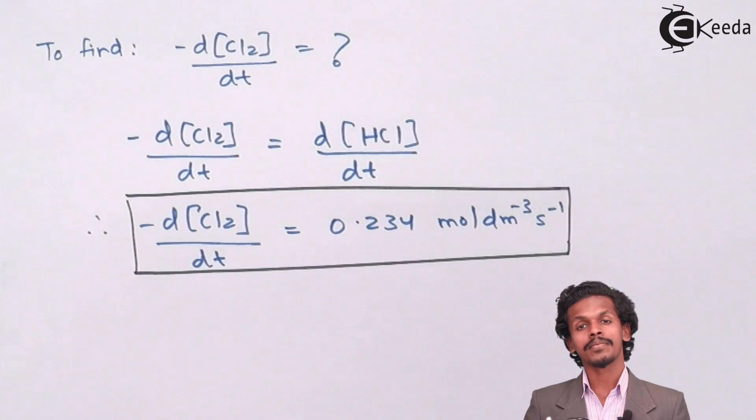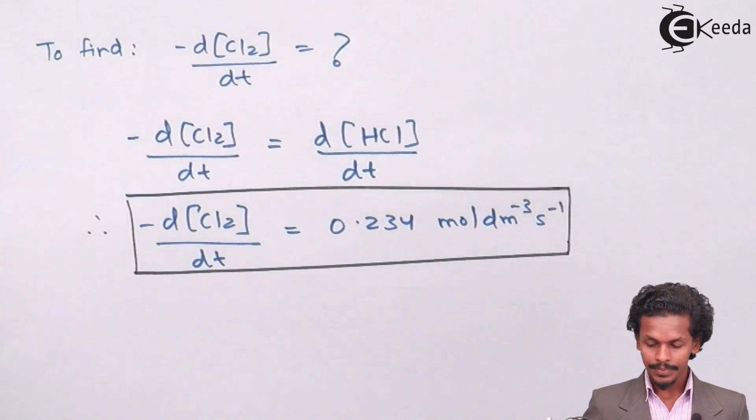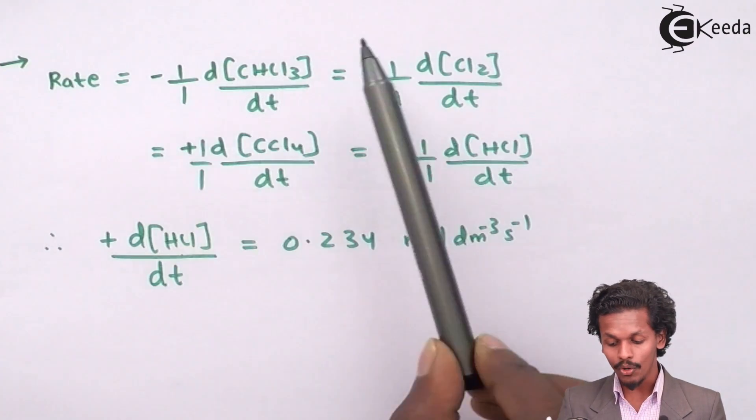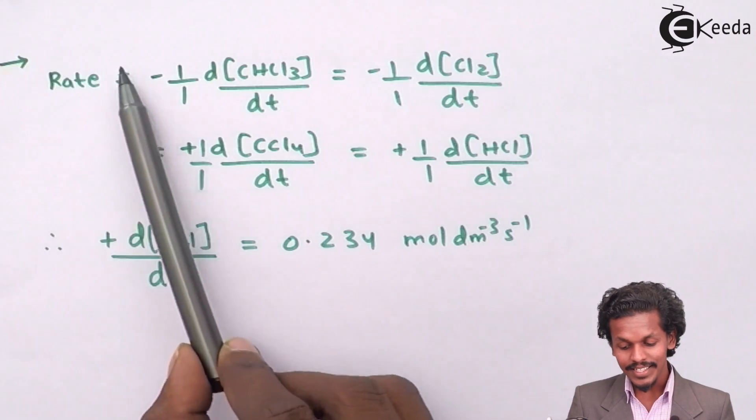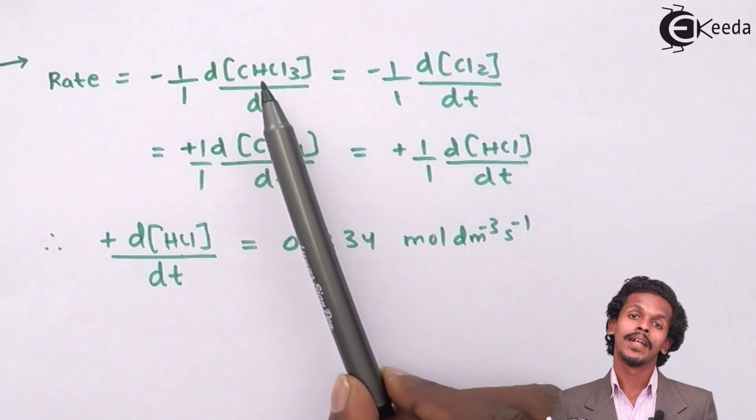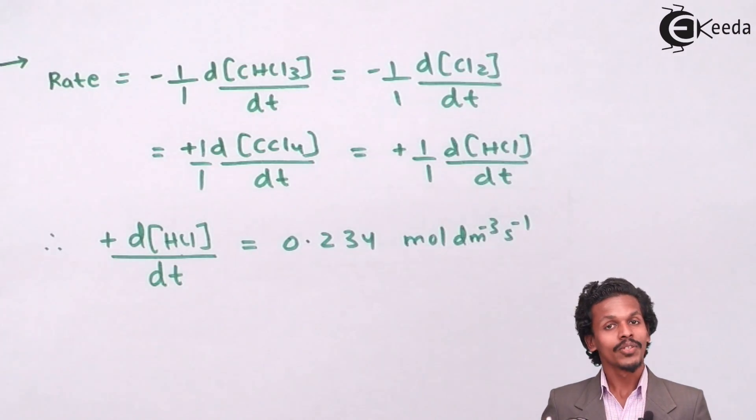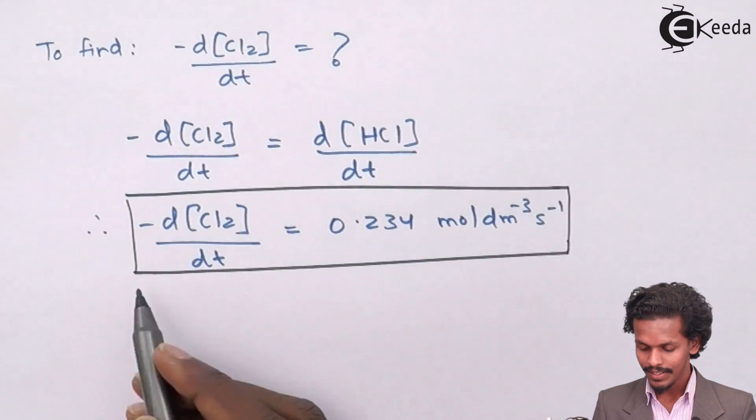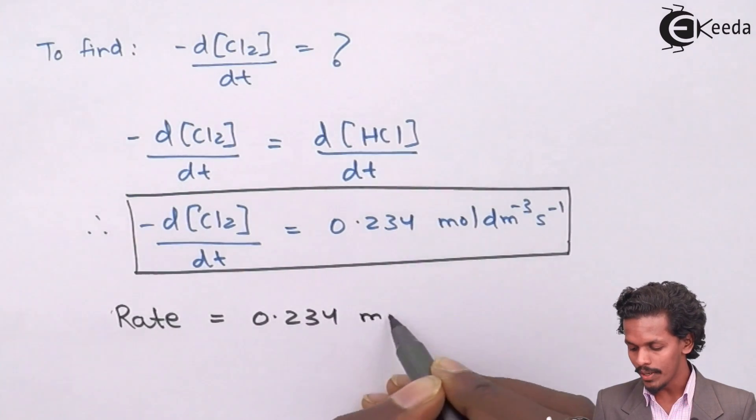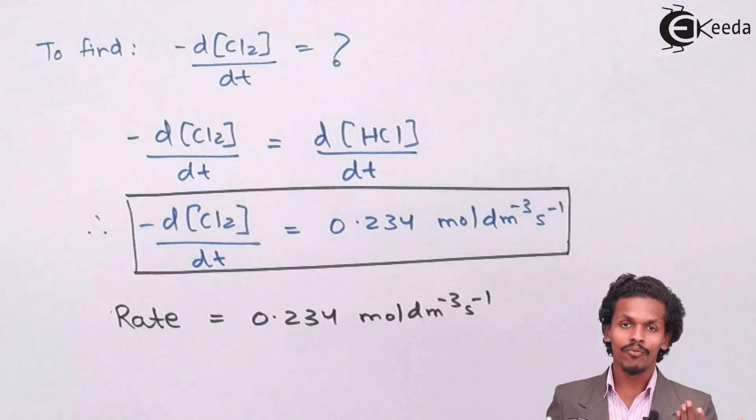And finally, we have to determine the rate of the reaction. As you know that the whole equation has a stoichiometry of 1. So therefore, rate is equals to the value of CHCl3 that we have got. That is the rate of consumption of CHCl3 and again the rate of consumption of Cl2 and the rate of formation of HCl. So therefore, we could finally write as the rate of the reaction is 0.234 moles per dm³ per second for each reactant and for product.